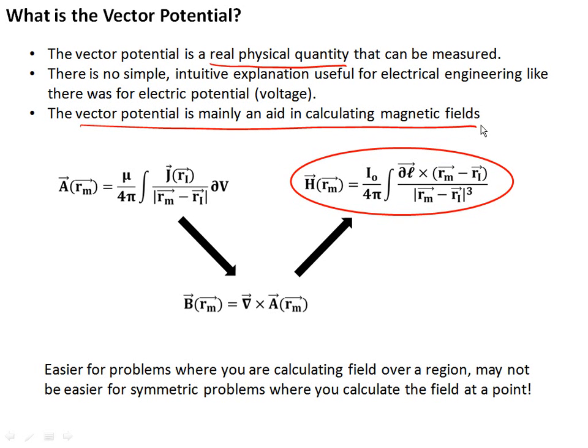And this is generally what it's used for. We're going to use it when we calculate antennas or how we can couple radiation out of a circuit into space. And it's going to be useful there. But unless you get into quantum mechanics, the idea of vector potential is really just as an aid to calculation.